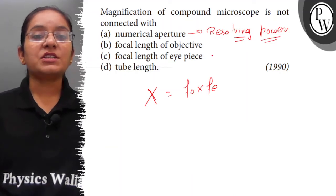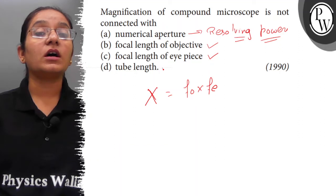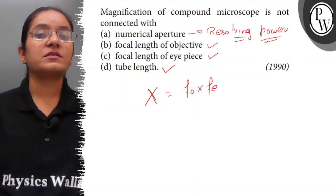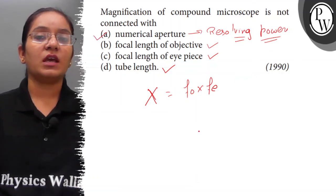So, magnification depends on focal length of objective lens, eyepiece lens, and tube length. But numerical aperture is directly dependent on resolving power. It gives the resolving power. Therefore, the correct answer for the question here is option A. Thank you.